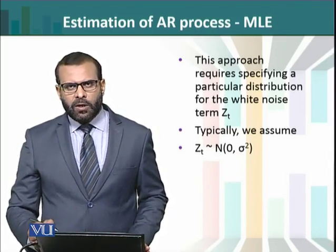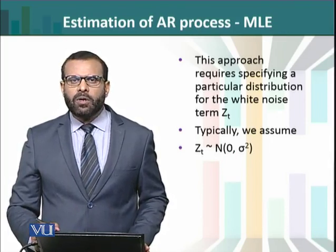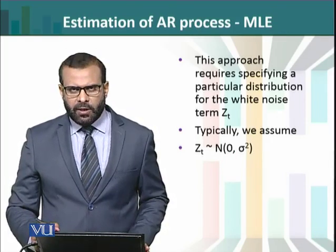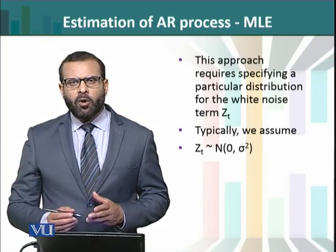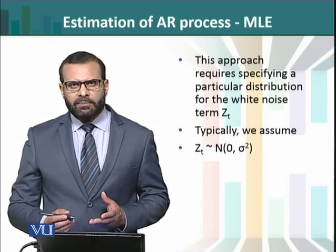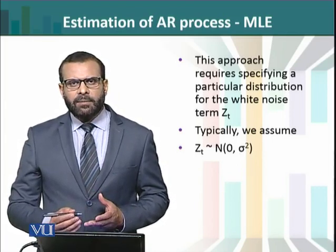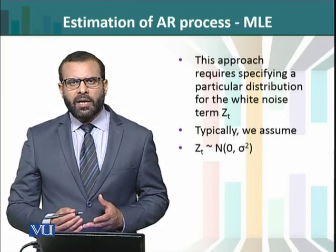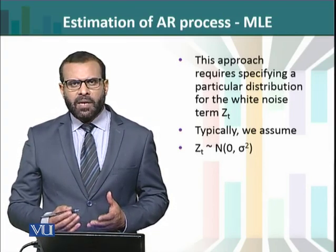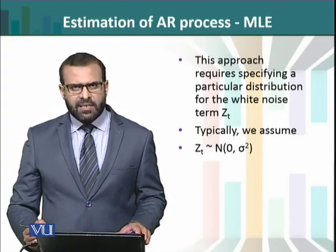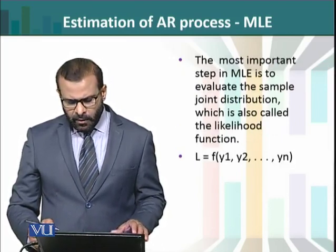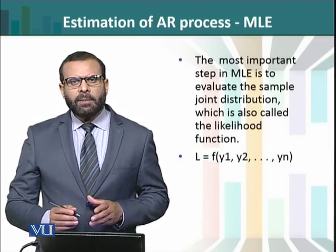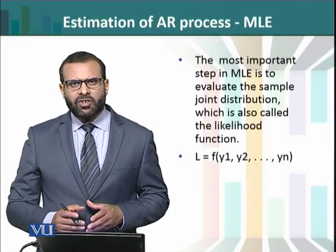Mean is equal to zero and variance is equal to sigma square. Ab agar is knowledge ko hum assume karein — jo ke bahut ek fair assumption hai — ki error term normally distributed hai with mean zero and variance sigma squared, to yahan se hum ML estimation ki foundation bana sakte hain. Ab jo sabse pehla step hota hai ML estimation ke liye,